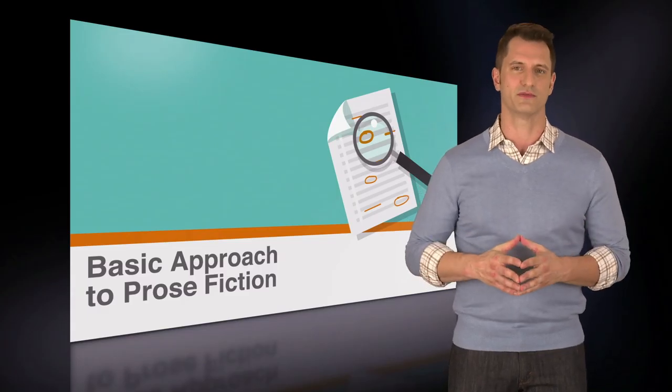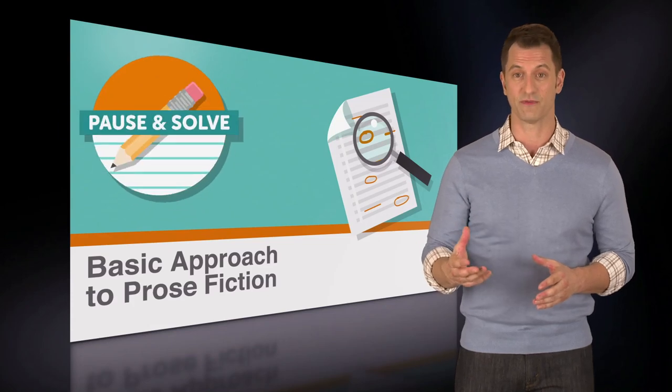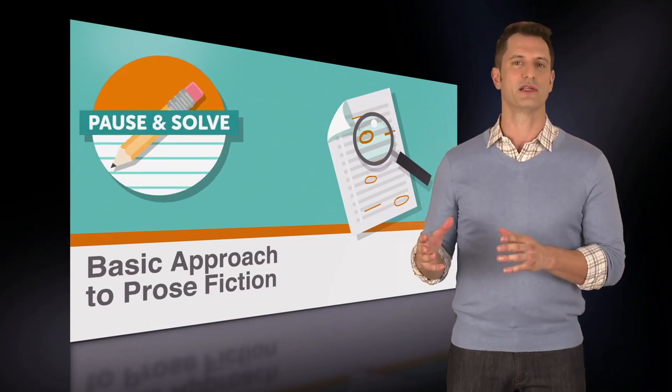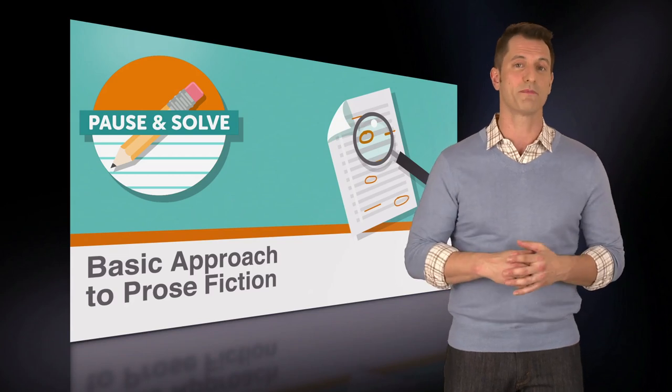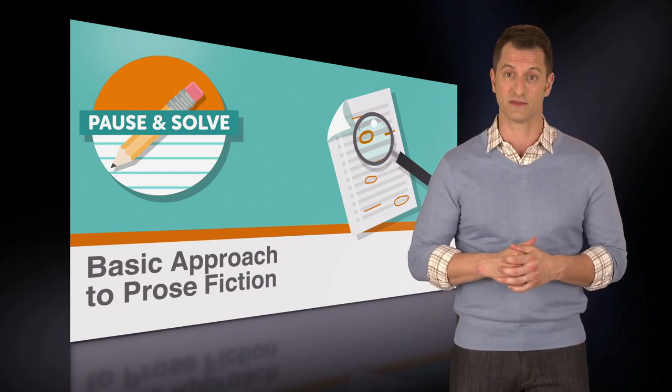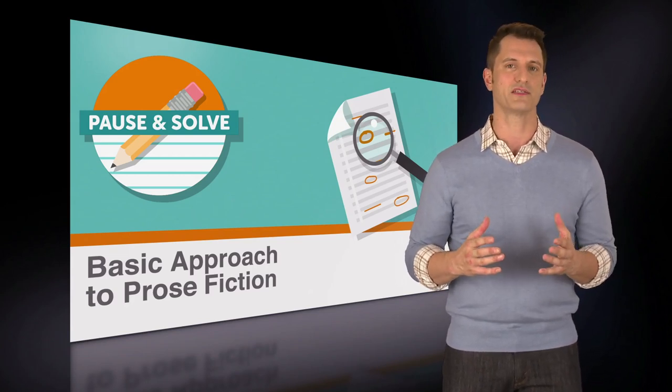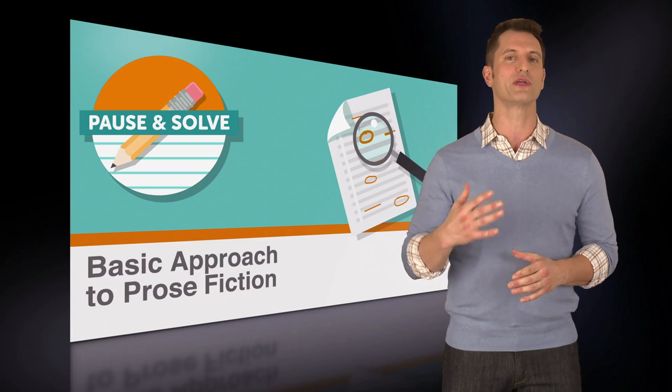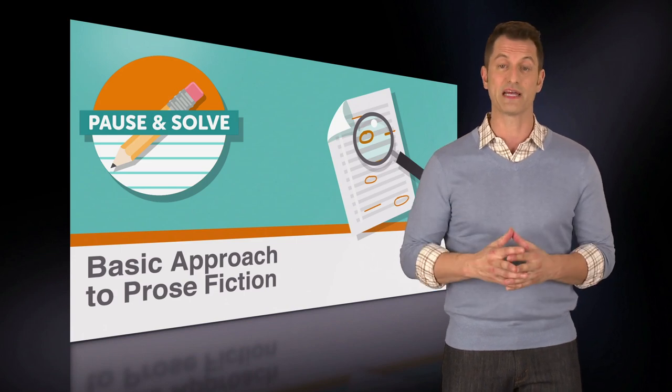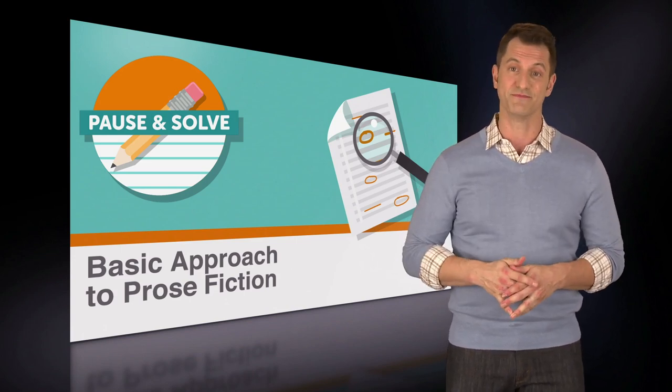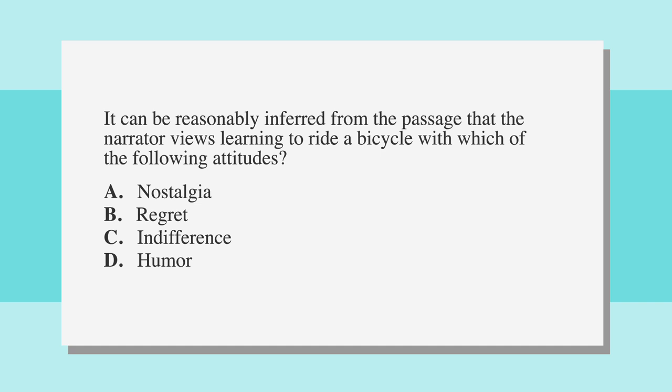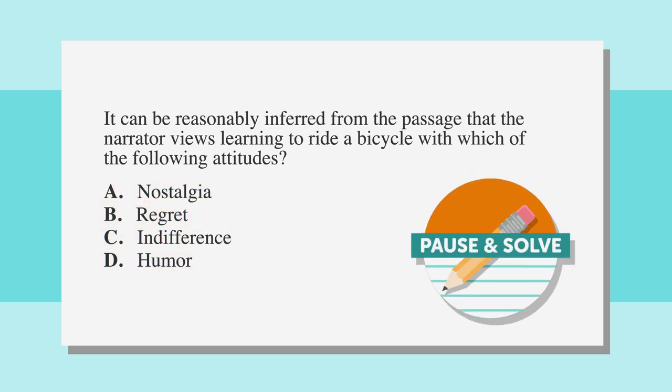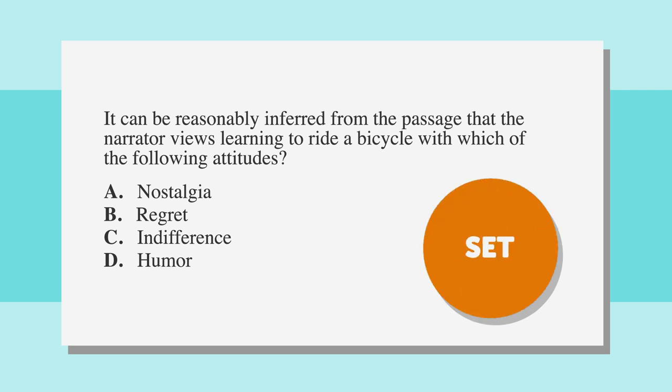Now let's go through another question and we'll make it another pause and solve. After we look at the question, I'll give you the signal to pause. You should then return to the passage in the lecture notes for this lesson. Once you've read the entire passage, come back to the question to work through the answer choices. When you have your answer, unpause the video and we'll see how you did. It can be reasonably inferred from the passage that the narrator views learning to ride a bicycle with which of the following attitudes. Here are our answer choices. Ready, set, pause.